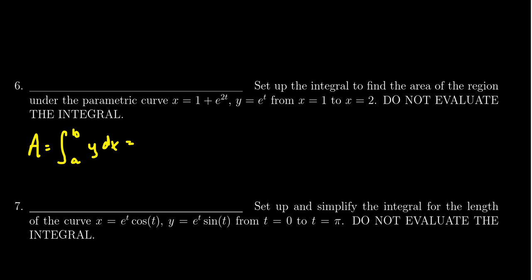So doing so, we're going to get for y, we get e to the t. Then we have to take the derivative of x with respect to t. When you take the derivative of a constant, that's going to disappear. So you're going to get 2e to the 2t dt.